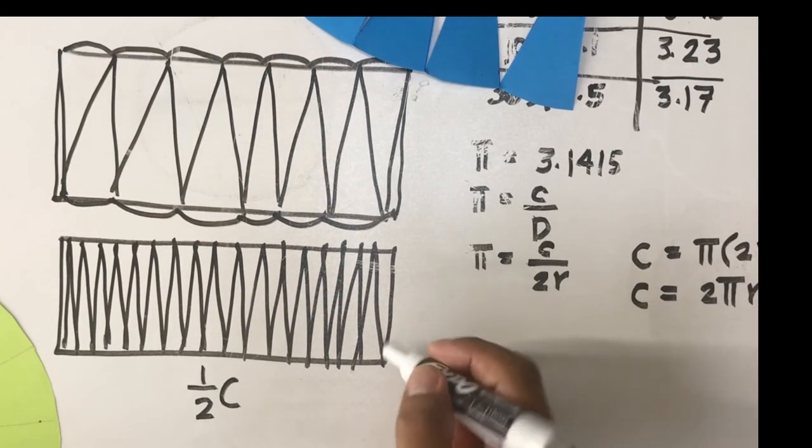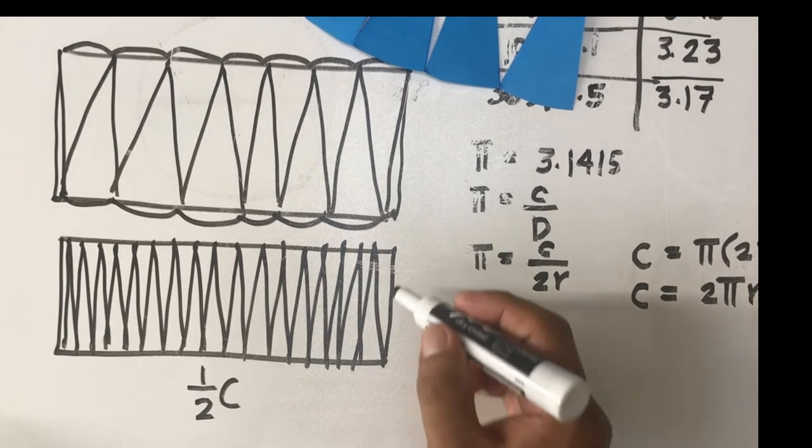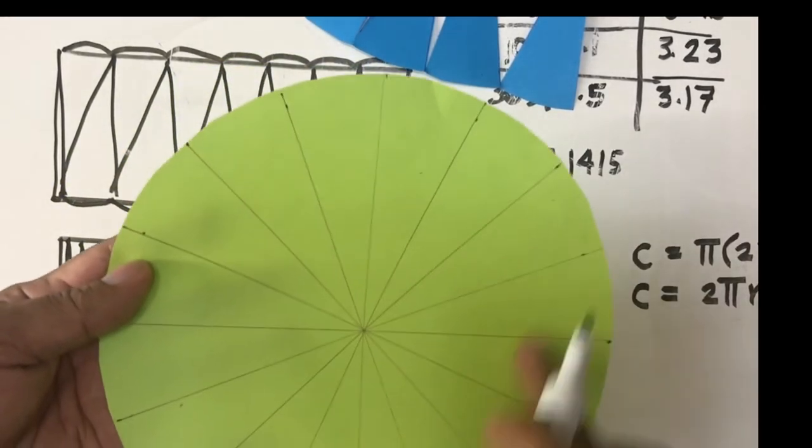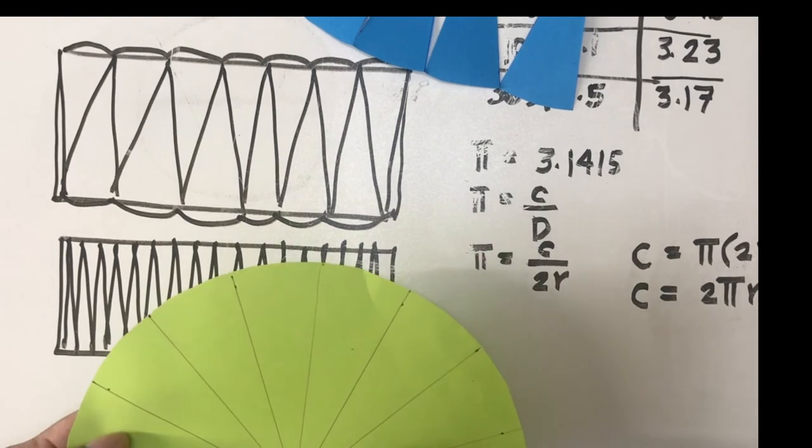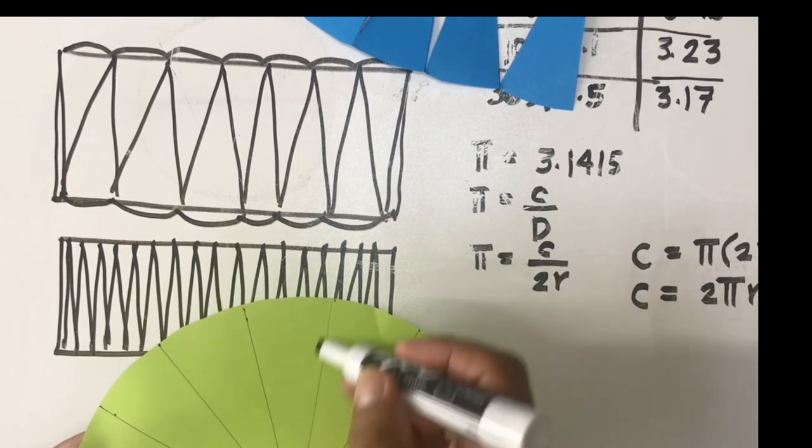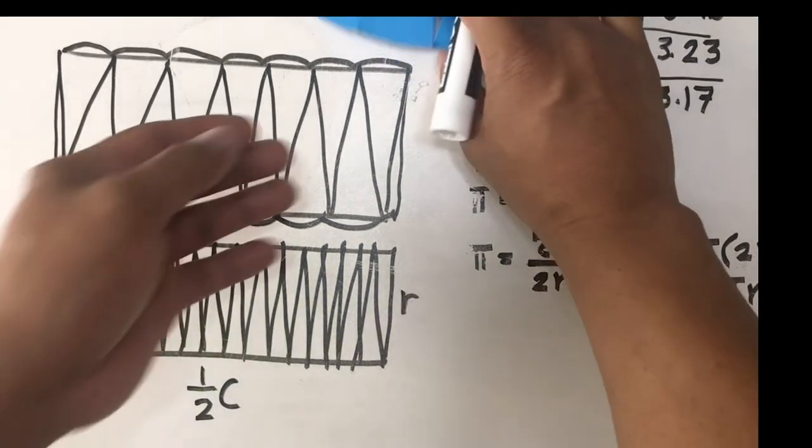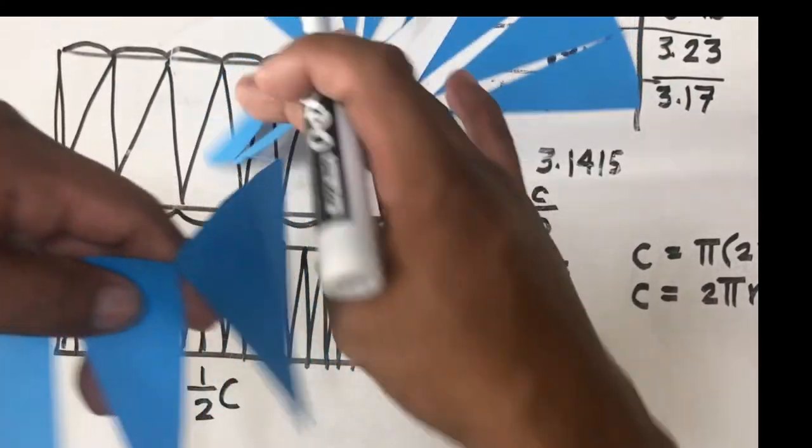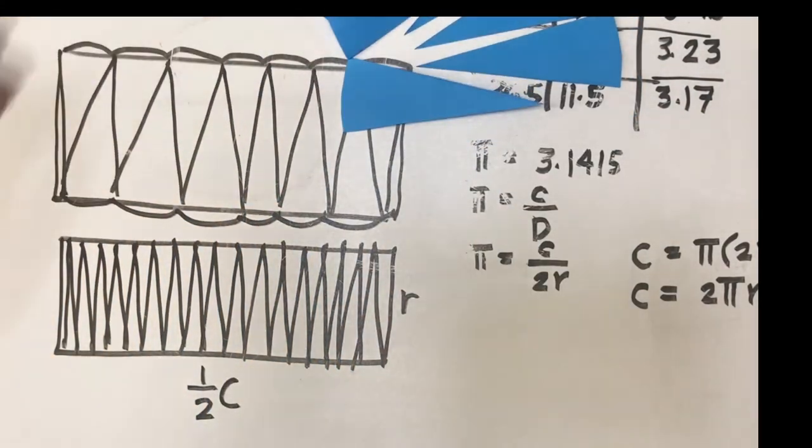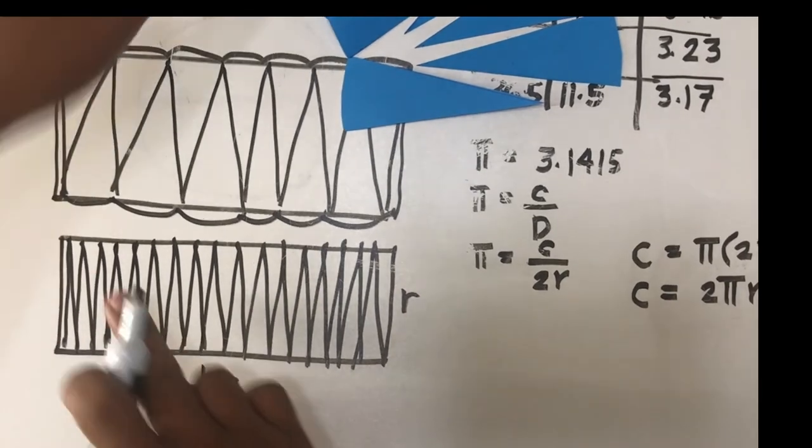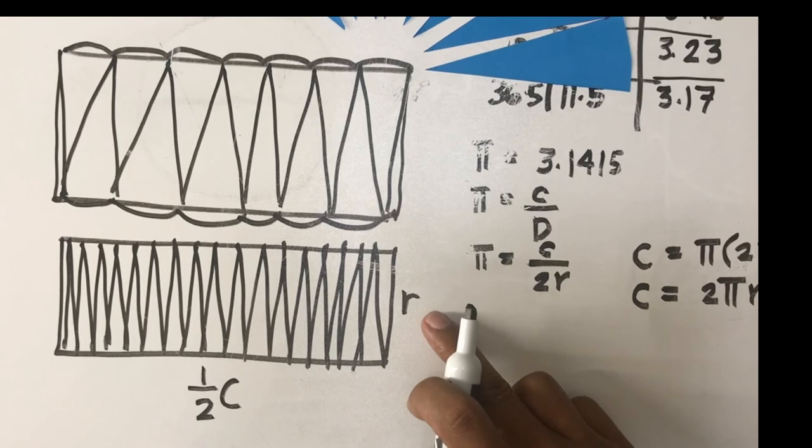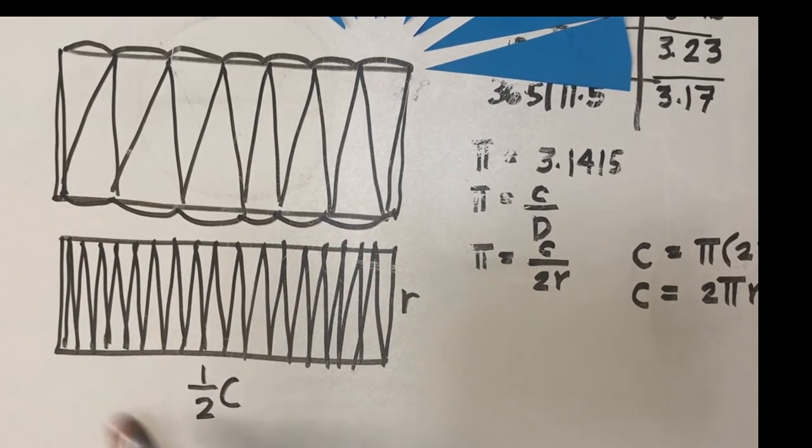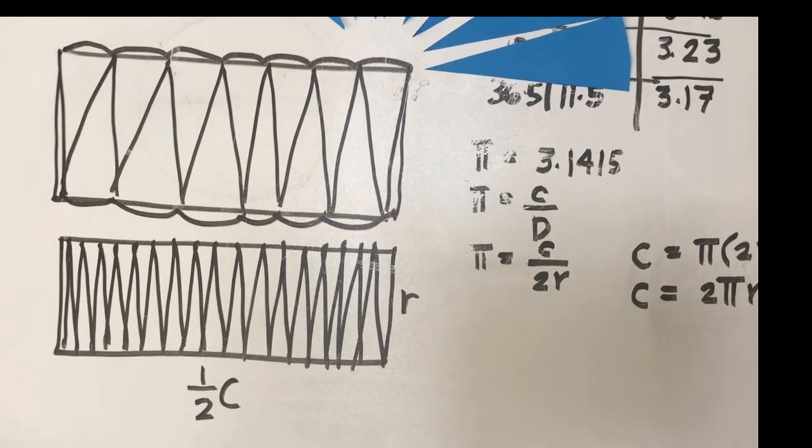But what does this length represent? So in our circle, this length is represented by the radius. So this length is the radius of the circle. Now since this shape is a rectangle, we can find now the area of this rectangle as the product of the length and the width.